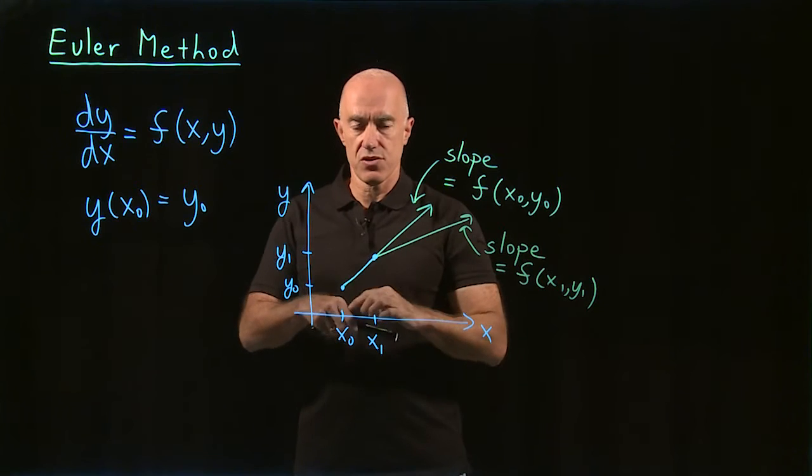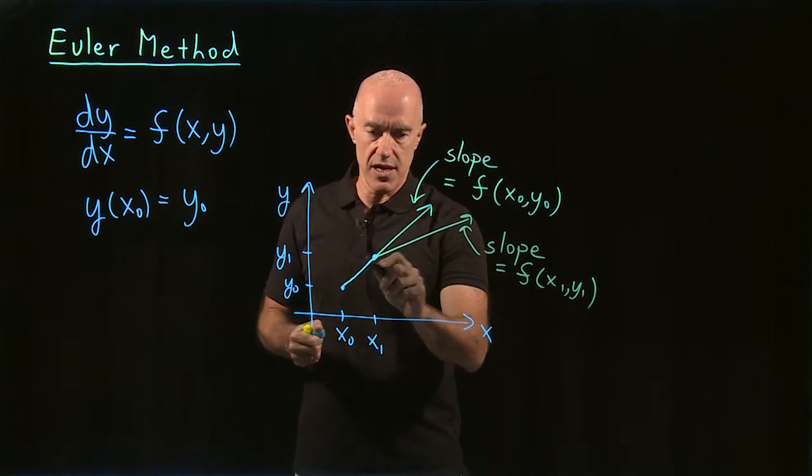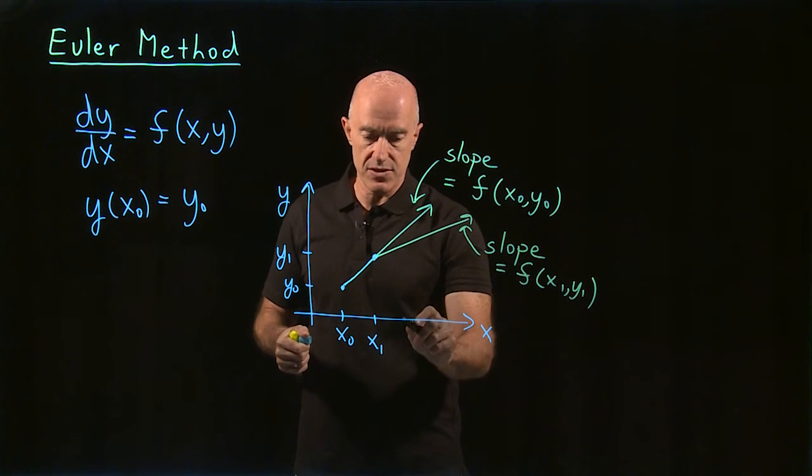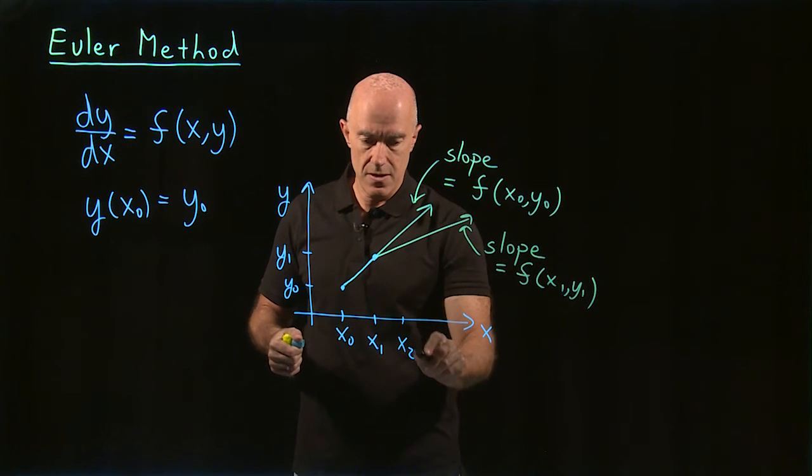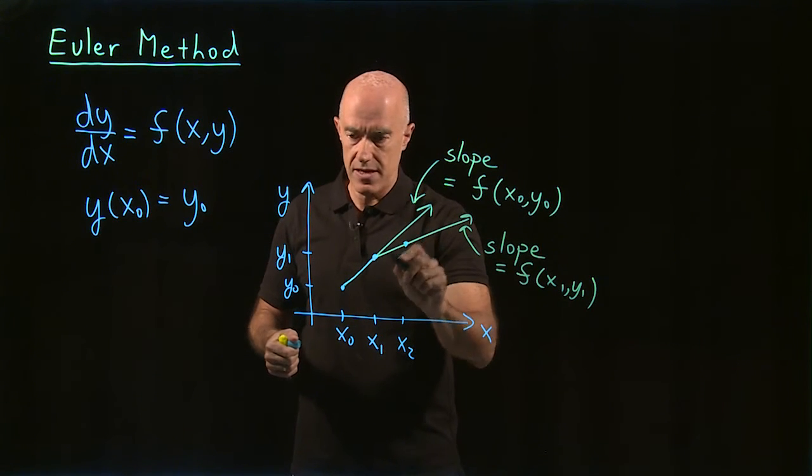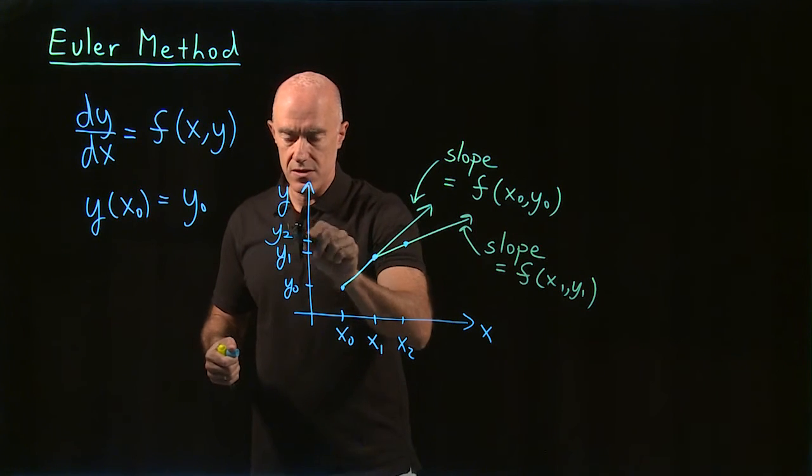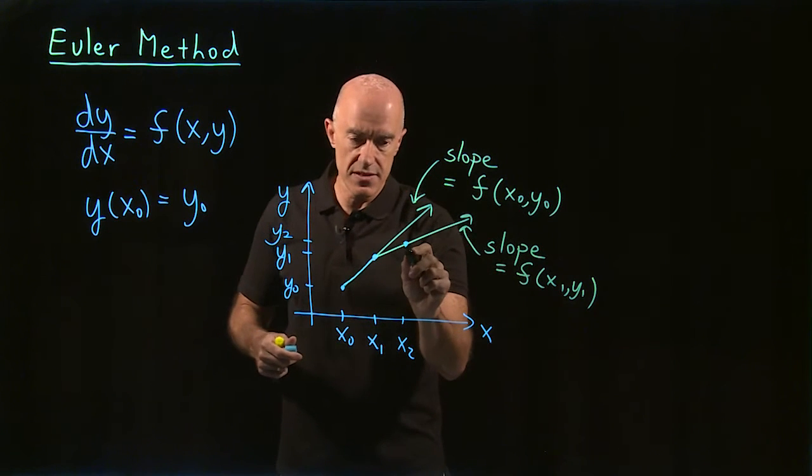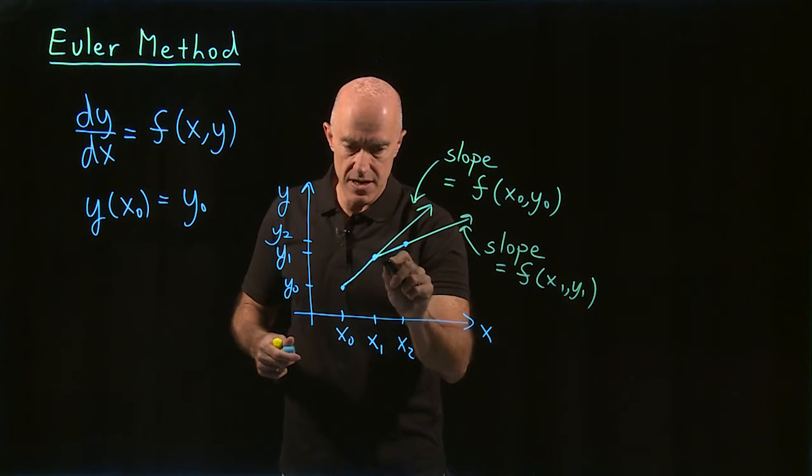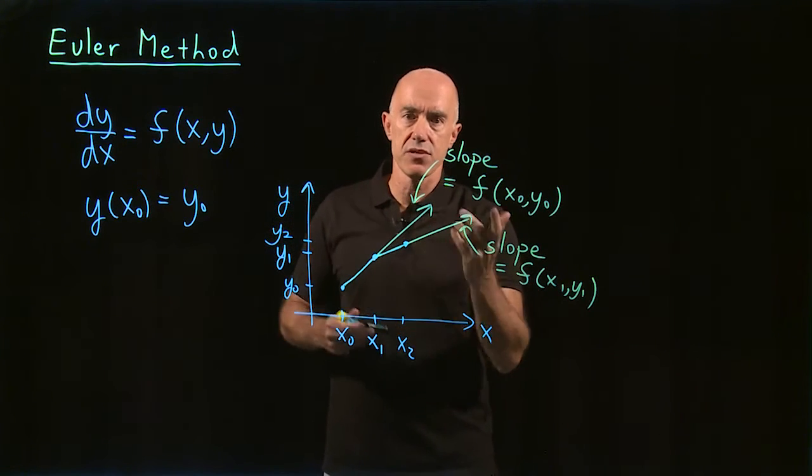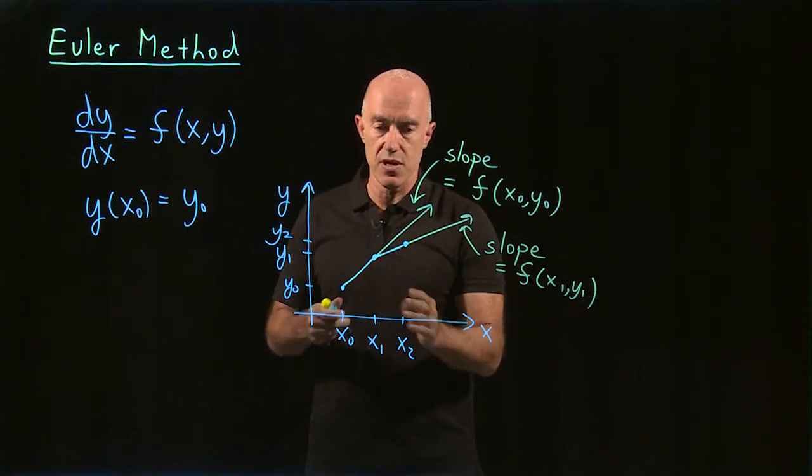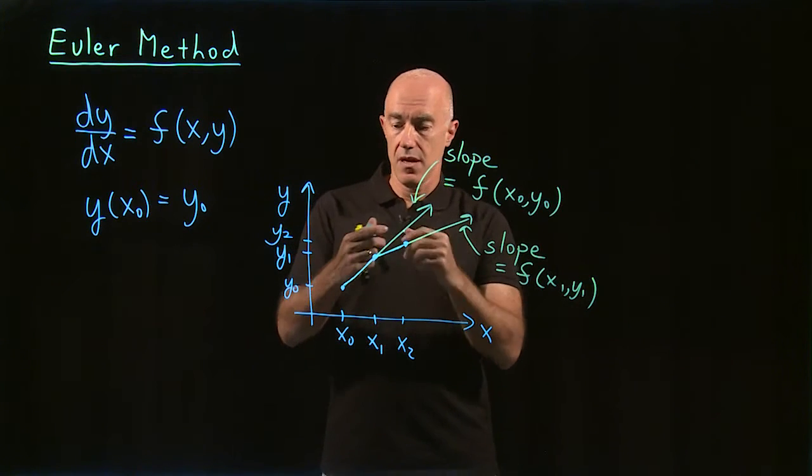And we march the solution along this line. So we get to x2 here. And then we'll be here. And this will be the value then of y2. And this line segment here becomes the approximation to the solution between x1 and x2.